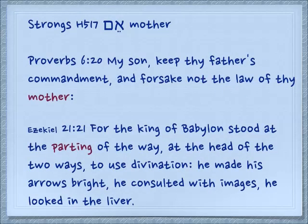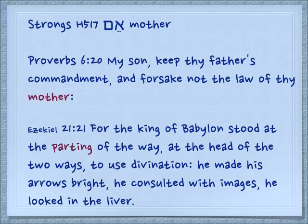Proverbs 6:20: 'My son, keep thy father's commandment and forsake not the law of thy mother.' This is part of the reason that in modern Judaism, the ethnic identity of being Jewish is followed through the mother — the mother is the one who trains the child on her knee. This is a little bit different meaning. Ezekiel 21:21: 'For the king of Babylon stood at the parting of the way, at the head of the two ways, to use divination.' In this sense, the mother is the origin place, the place where the roads are together but then they split.